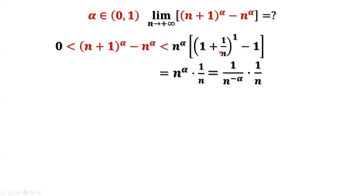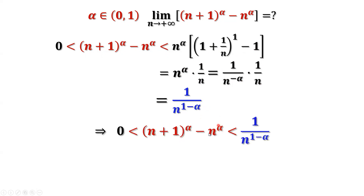Simplifying the inside part: one minus one cancels out. Then we have n to the power of alpha times one over n. We write n to the power of alpha times one over n to the power of negative alpha. Simplifying the right-hand side, we have one over n to the power of one minus alpha.